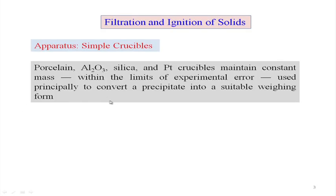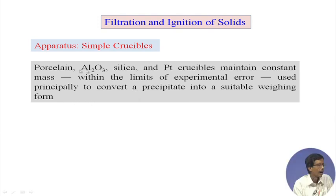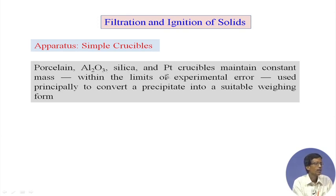Hello, welcome to this class. In the previous session we discussed how we can use different crucibles — we have seen that we can have different types: porcelain crucible, alumina crucible, silica crucible, and platinum crucible. We are now discussing about the precipitate ferric hydroxide.